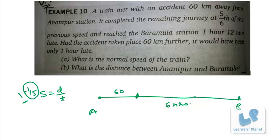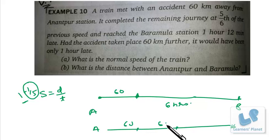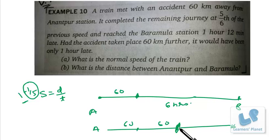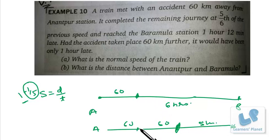In the second case, the accident takes place 60 km further. So now the accident point is 120 km from Anantapur. In this case, the train is only 1 hour late. Again, the speed after the accident is 5/6, so 1/5 of the remaining time is extra, and that extra equals exactly 1 hour. This means the normal time from this second accident point to Baramula is 5 hours.